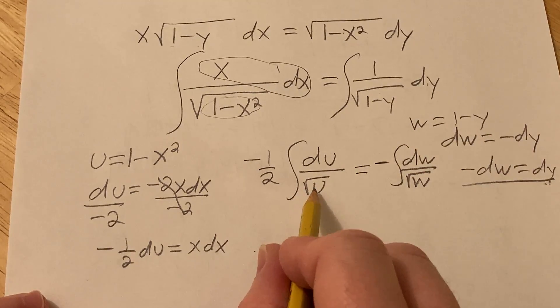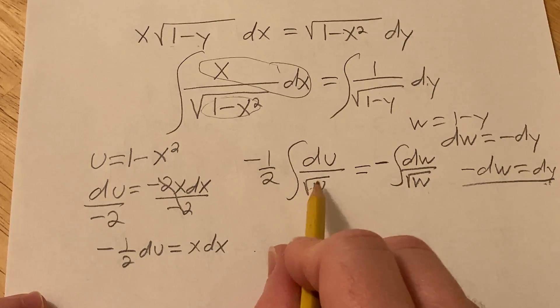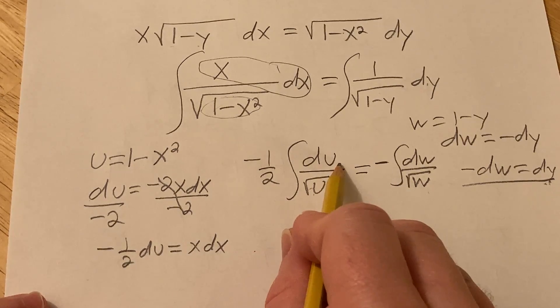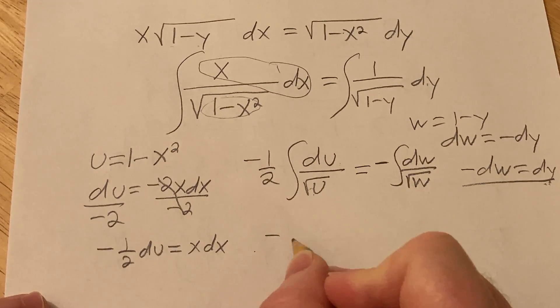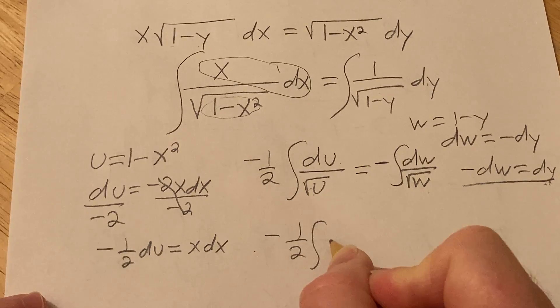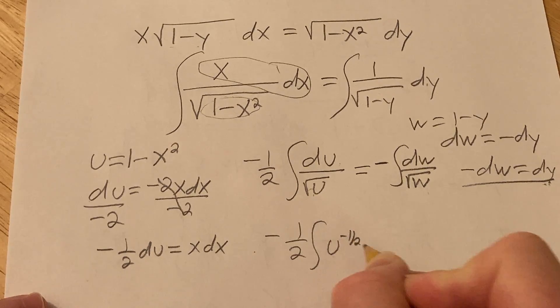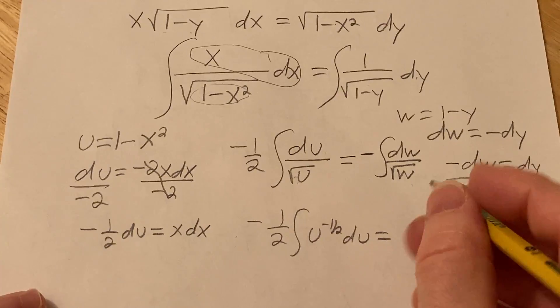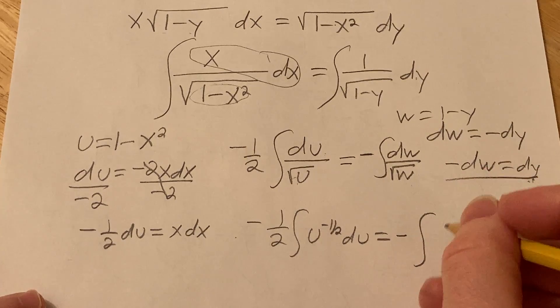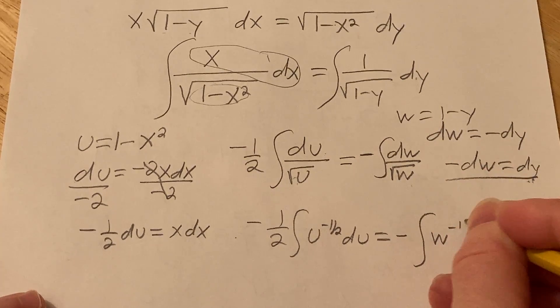In both of these cases, we write each of these to the 1 half power, and then bring them up, and so therefore the exponent becomes negative. So this is negative 1 half u to the negative 1 half du equals negative, and then here we have w to the negative 1 half dw.